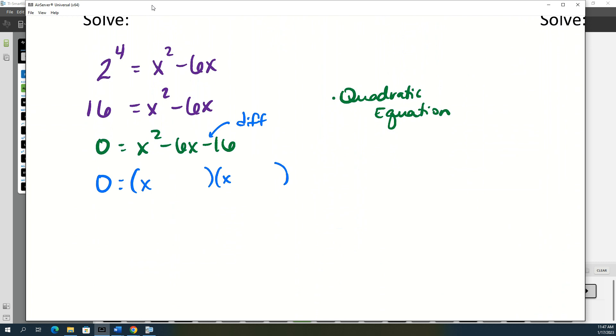So that minus sign last is going to tell us our signs are different. And then we want to multiply to get 16 and subtract to get negative 6. So that's going to be 8 and 2. And because I want to get negative 6, that means my 8 is going to be negative and my 2 is going to be positive.